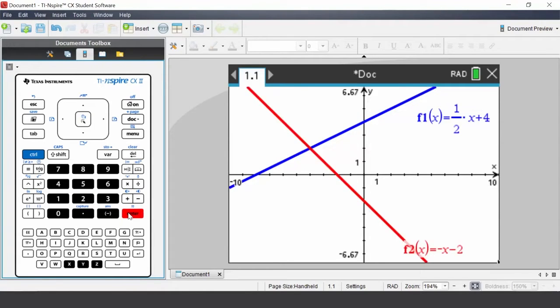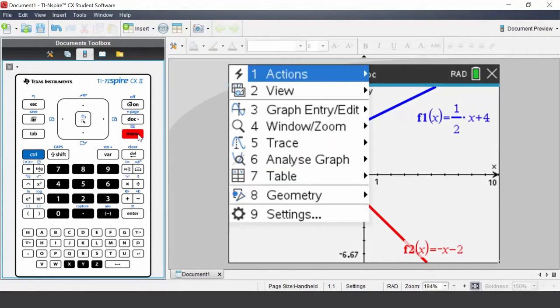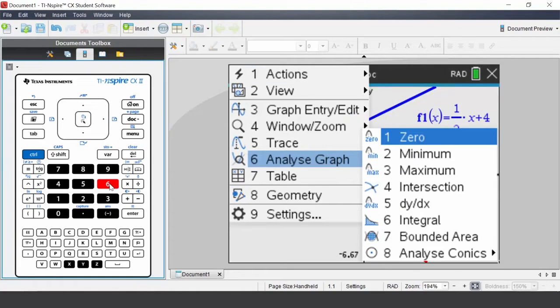The graphs intersect. To determine the point of intersection, press menu, select analyze graph, select intersection.